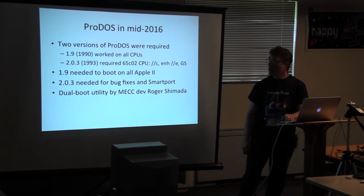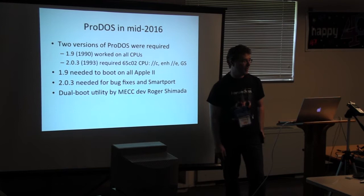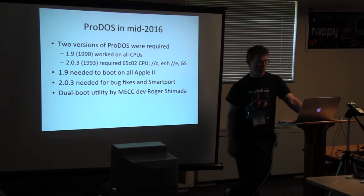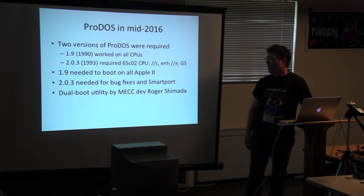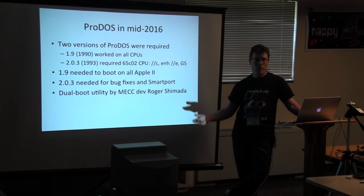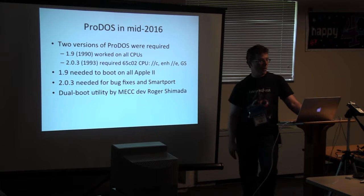The state of ProDOS in mid-2016 when I started getting back into Apple II development: as of last year there were two versions of ProDOS required if you were making software. You either needed 1.9, which came out in 1990 and worked on all CPUs and all Apple IIs, or 2.03, which required a 65C02 — meaning it had to be a IIc or an enhanced IIe or IIGS. You needed 1.9 to boot on all Apple IIs, and 2.03 for bug fixes, SmartPort, CFFAs with multiple drives, SCSI, and lots of good things.